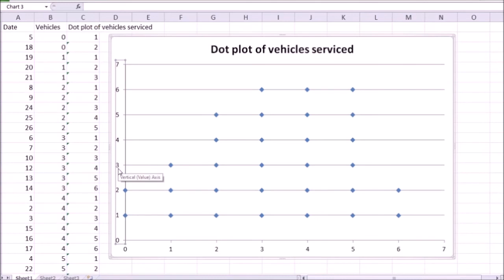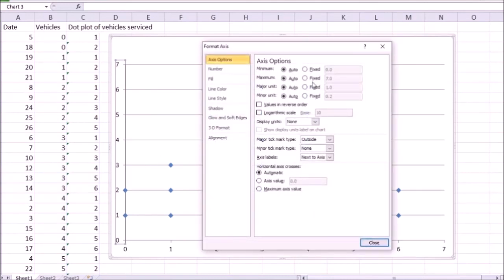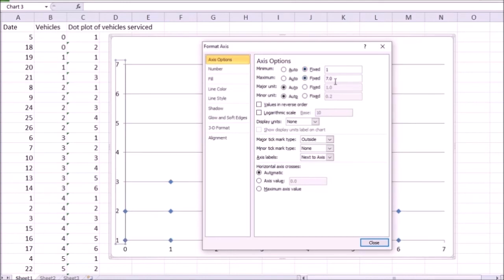And to do that, I click on the vertical axis, double click it, and for the minimum value, I'm going to enter one as fixed, and for the maximum value, I'm going to enter six as fixed.